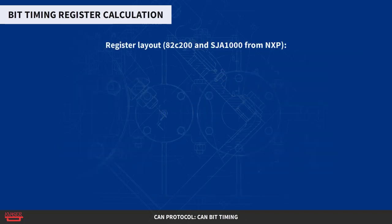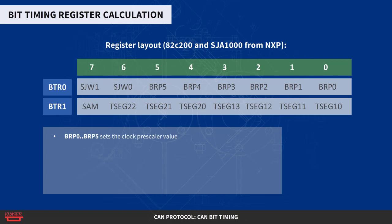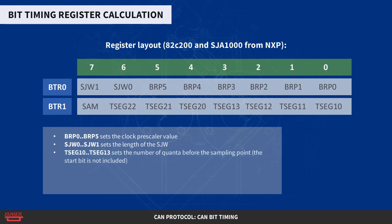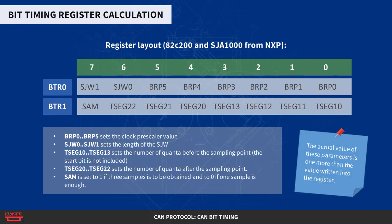On the 82C200 and SJA1000, both from NXP, the register layout is like this. BRP0 to BRP5 sets the clock prescaler value. SJW0 to SJW1 sets the length of the SJW. TSEG10 to TSEG13 sets the number of quanta before the sampling point — the start bit is not included. TSEG20 to TSEG22 sets the number of quanta after the sampling point. SAM is set to one if three samples are to be obtained, and to zero if one sample is enough. Note: the actual value of these parameters is one more than the value written into the register.